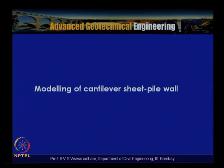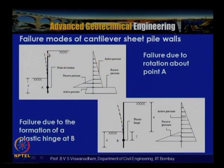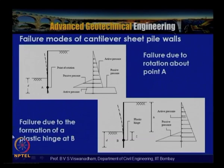Now let us look at tests done at IIT Bombay examining whether centrifuge model tests are actually warranted for cantilever sheet pile walls. There are two typical failure modes: wall failure (material failure) and soil failure. In the soil failure case, rotation occurs about point A — the wall undergoes rotational failure with active and passive pressure zones. In the material failure case, a plastic hinge forms at the point of maximum bending moment.